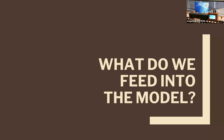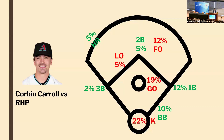Here's 2023 NL Rookie of the Year Corbin Carroll. Against right-handed pitching, you can see he grounded out 19% of the time, homered 5% of the time, and struck out 22% of the time.